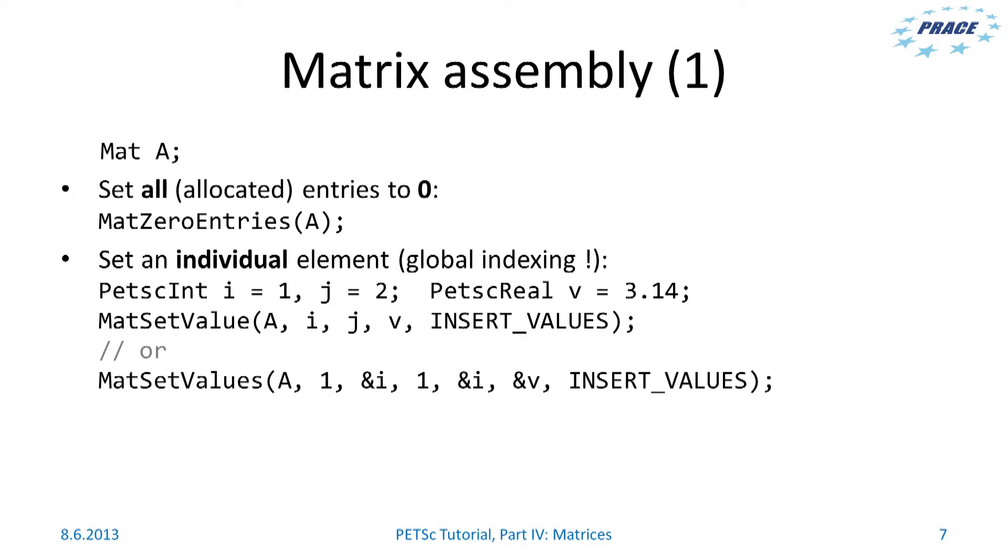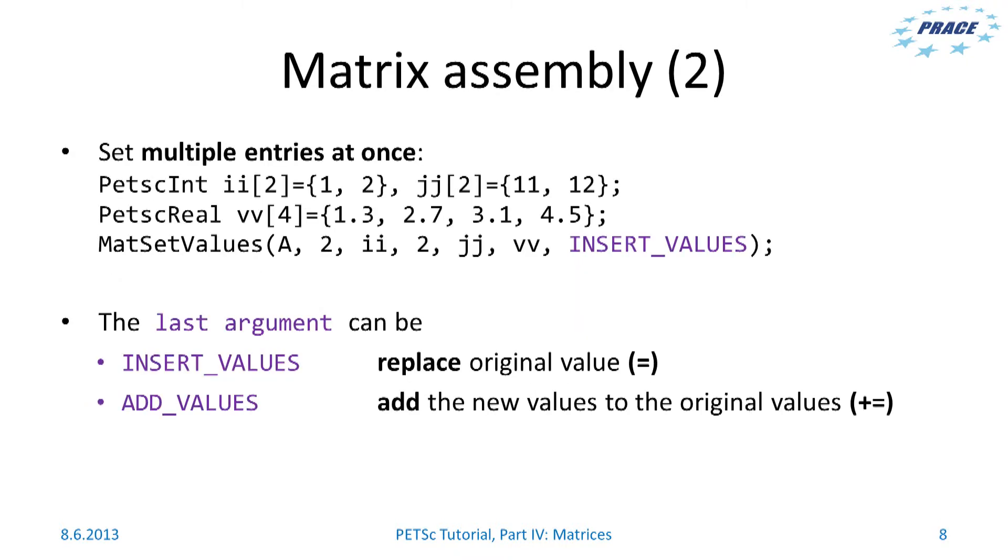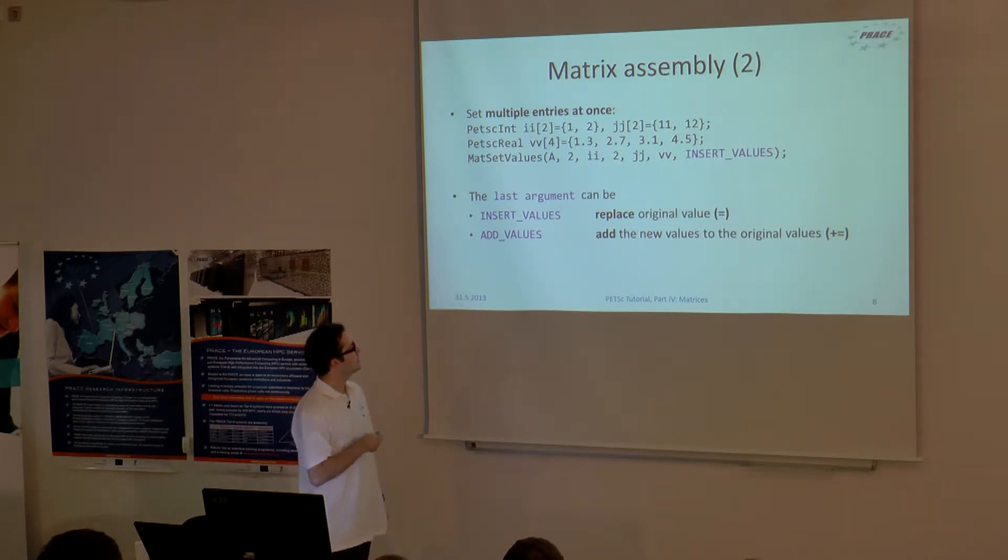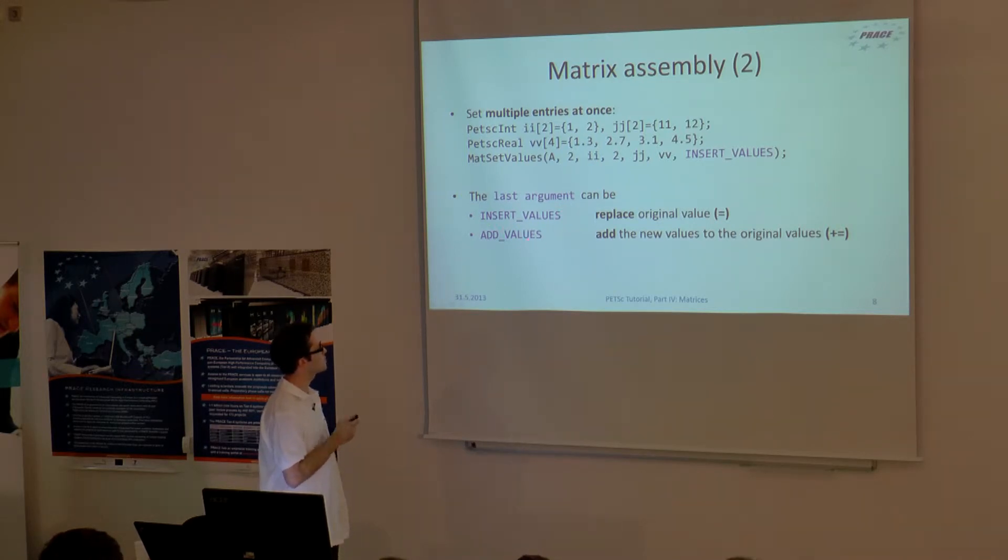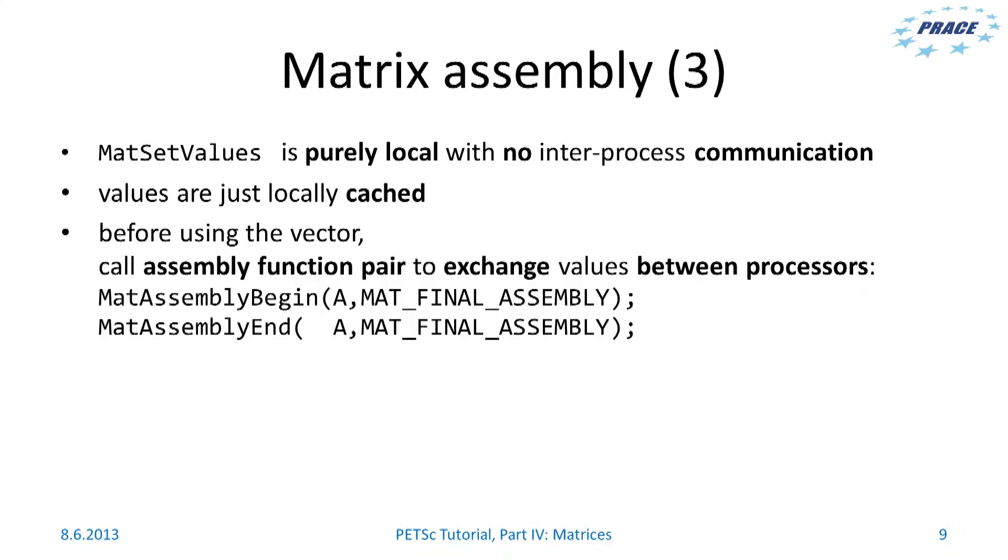How to assemble the matrix. You can again set all entries to zero and individual elements using MatSetValue. Similarly to vectors, you can also set multiple entries of matrix at once using MatSetValues. But be careful because it is in fact a 2 by 2 sub-block of the matrix, so you have 4 values in the value array. And again, like with vectors, the last argument can be INSERT_VALUES or ADD_VALUES. INSERT_VALUES to replace the values and ADD_VALUES to add the new values to the original ones. Again, MatSetValues is purely local function with no inter-process communications.